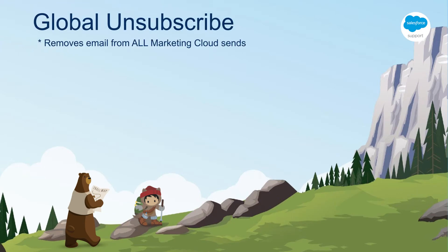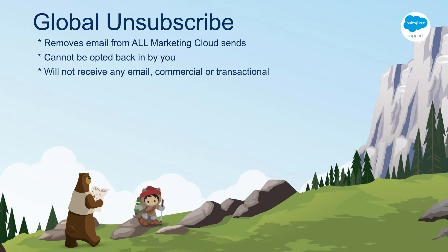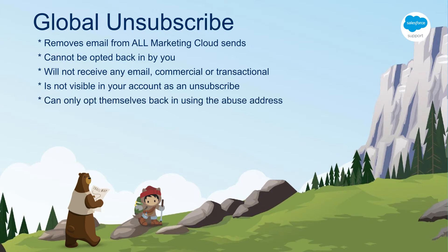The final level is more drastic. If a subscriber sends an email to our abuse email address and asks to not receive any more email from us, this is called a global unsubscribe. In this case, that customer will receive no email of any kind from any Marketing Cloud account, including yours. This includes transactional emails — nothing will be sent to them from the Marketing Cloud. You can't see this list, so in some cases you may not know why a single subscriber didn't get an email.